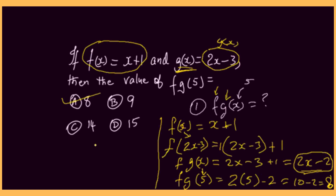What's the other method? The other method for finding f of g of 5 is to work from the inside out — what's closest to the 5 is g. So we're going to work out what g of 5 is, and whatever value g of 5 is, we put it into the f function.